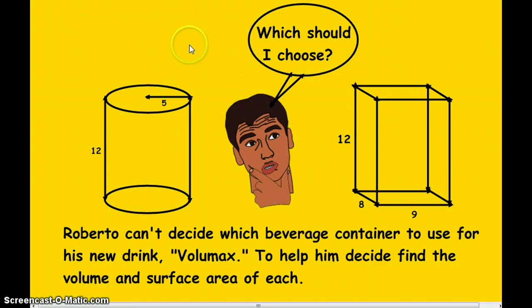Here is a guy that has a conundrum, a problem. His name is Roberto. He can't decide which container to use for his new drink. He's naming it Volume Max. He wants to have the most volume. Help him decide by finding the volume and surface area of each of these. Be sure to pause, go back, and try these again. Tomorrow I can tell you the answer.